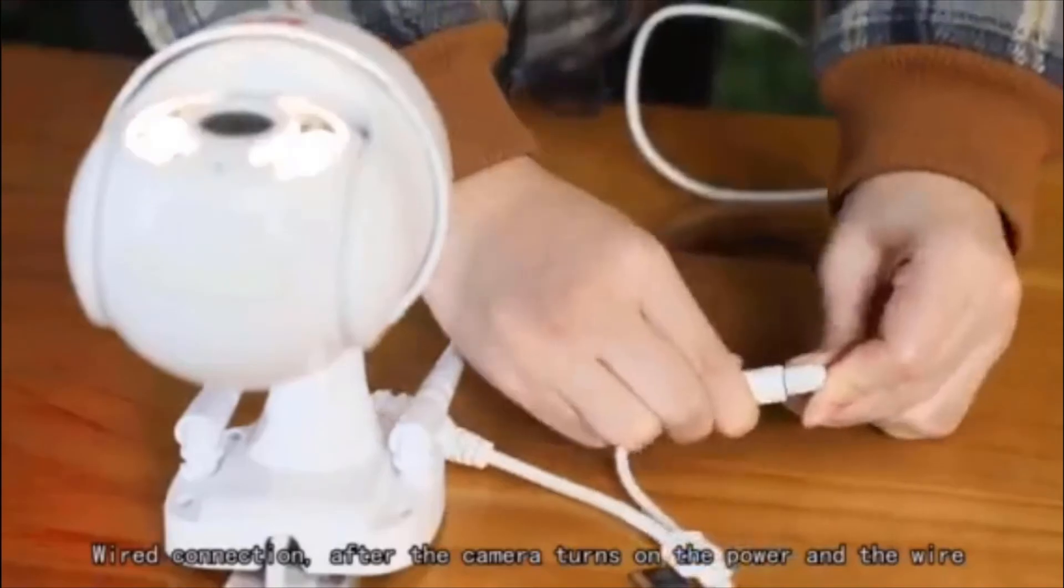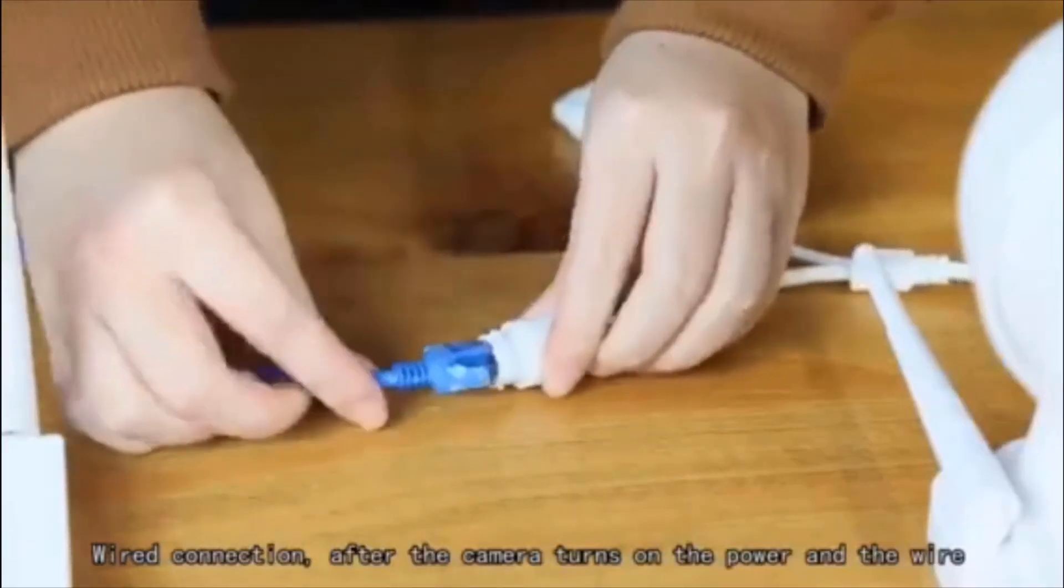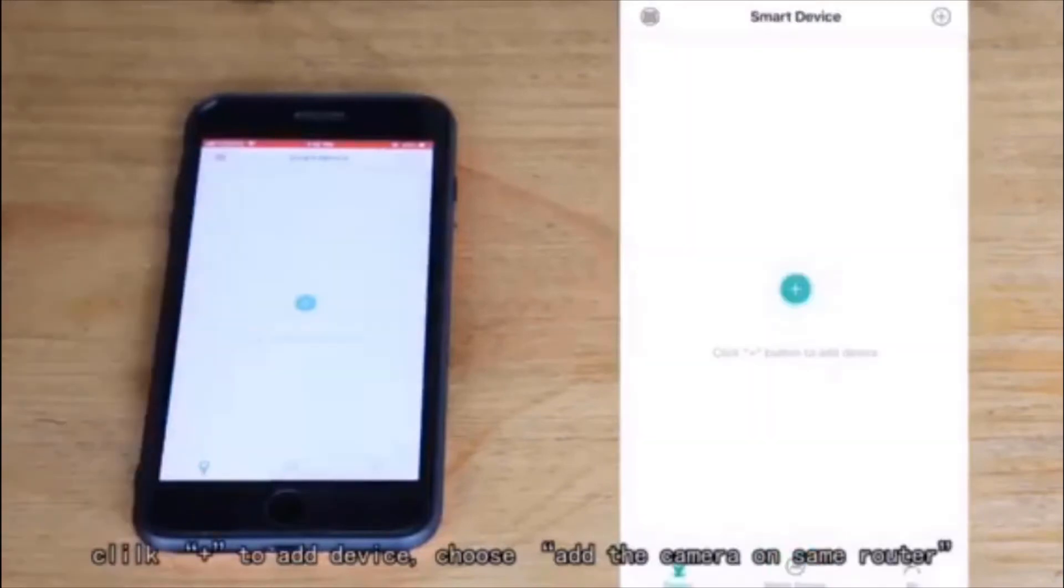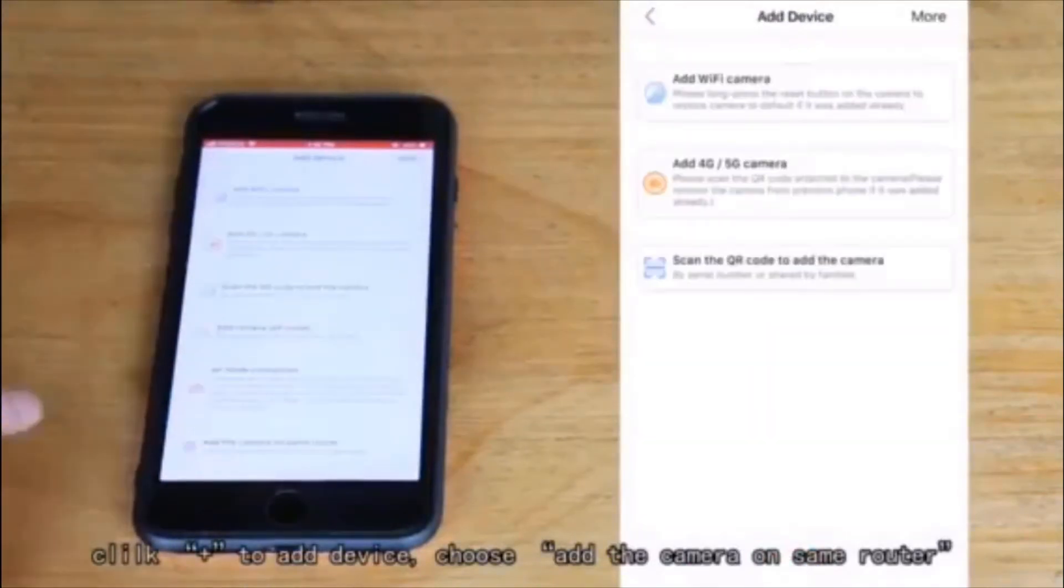Wired connection: after the camera turns on the power and the wire, log in the ICC app, click plus to add device, choose add the camera on same router.